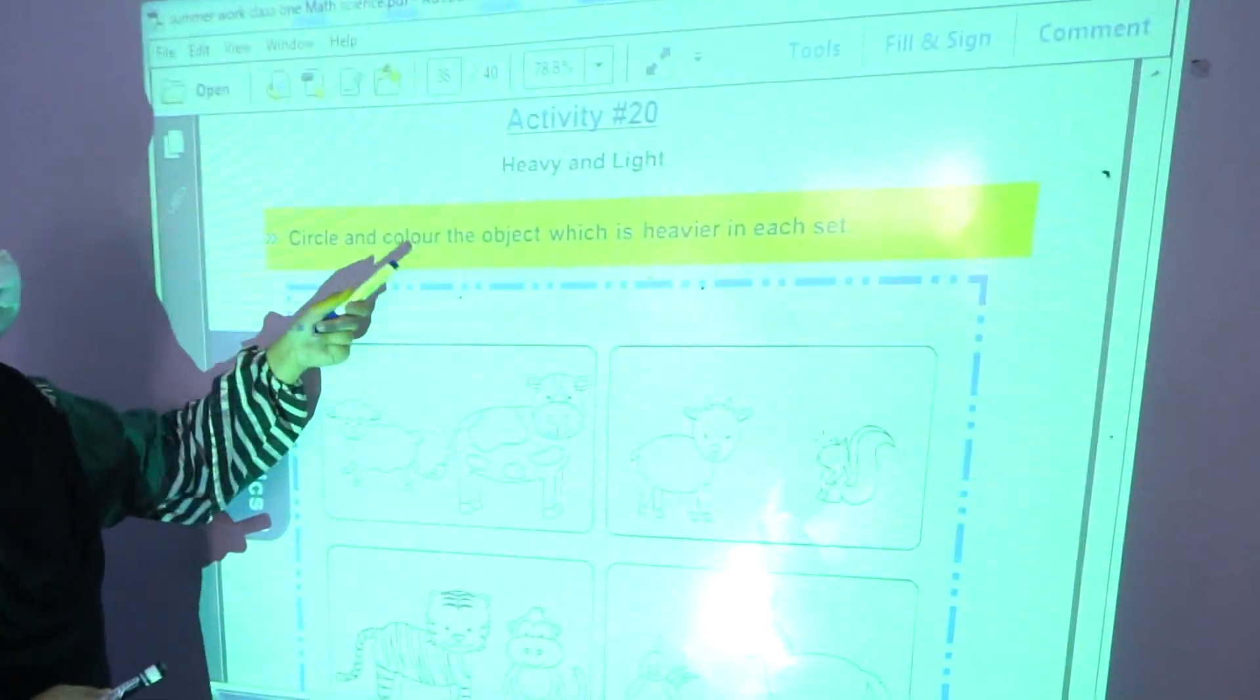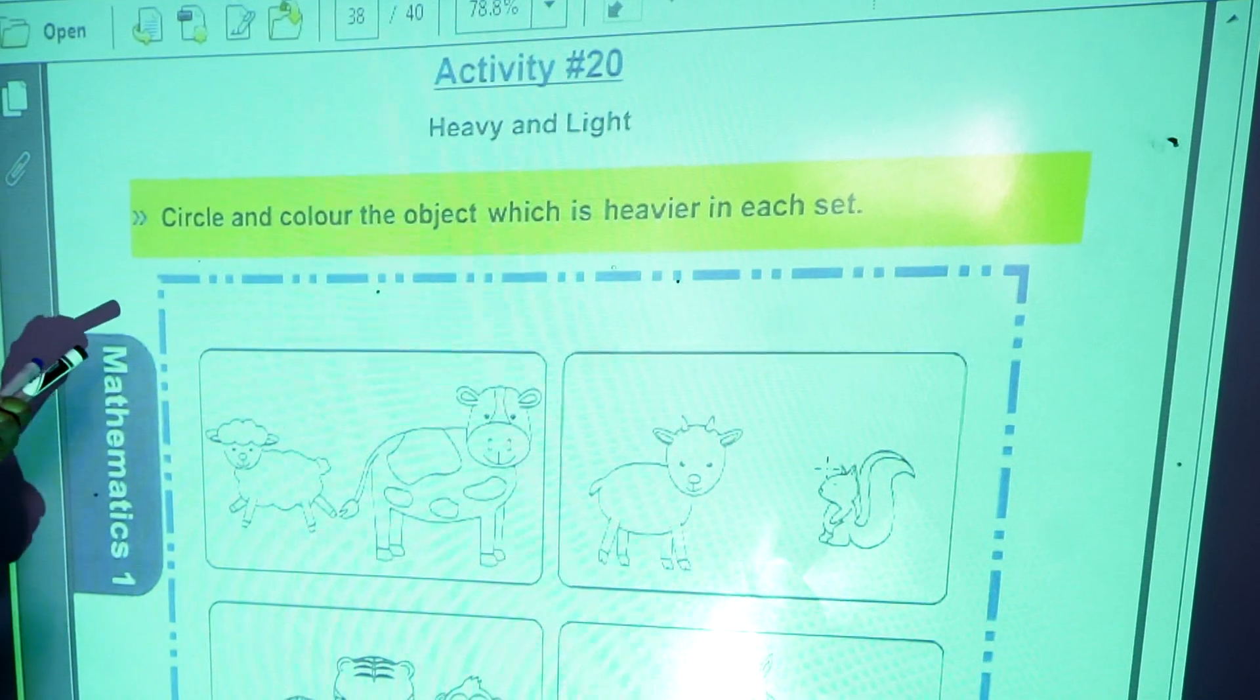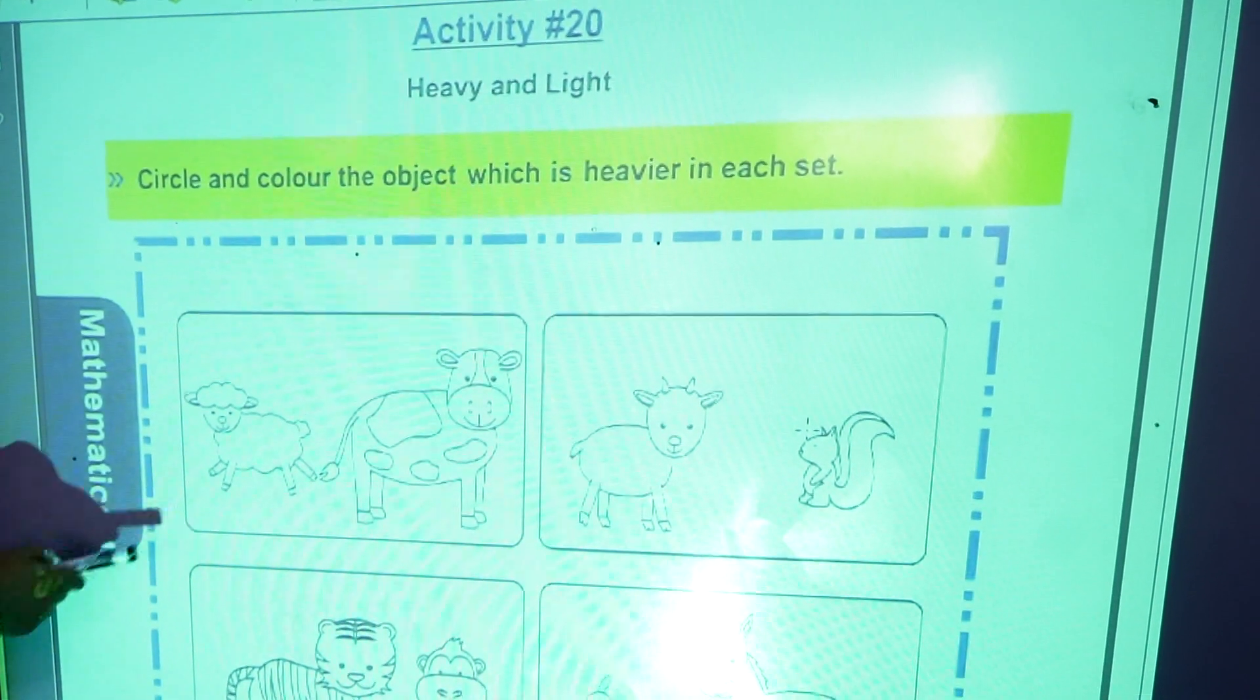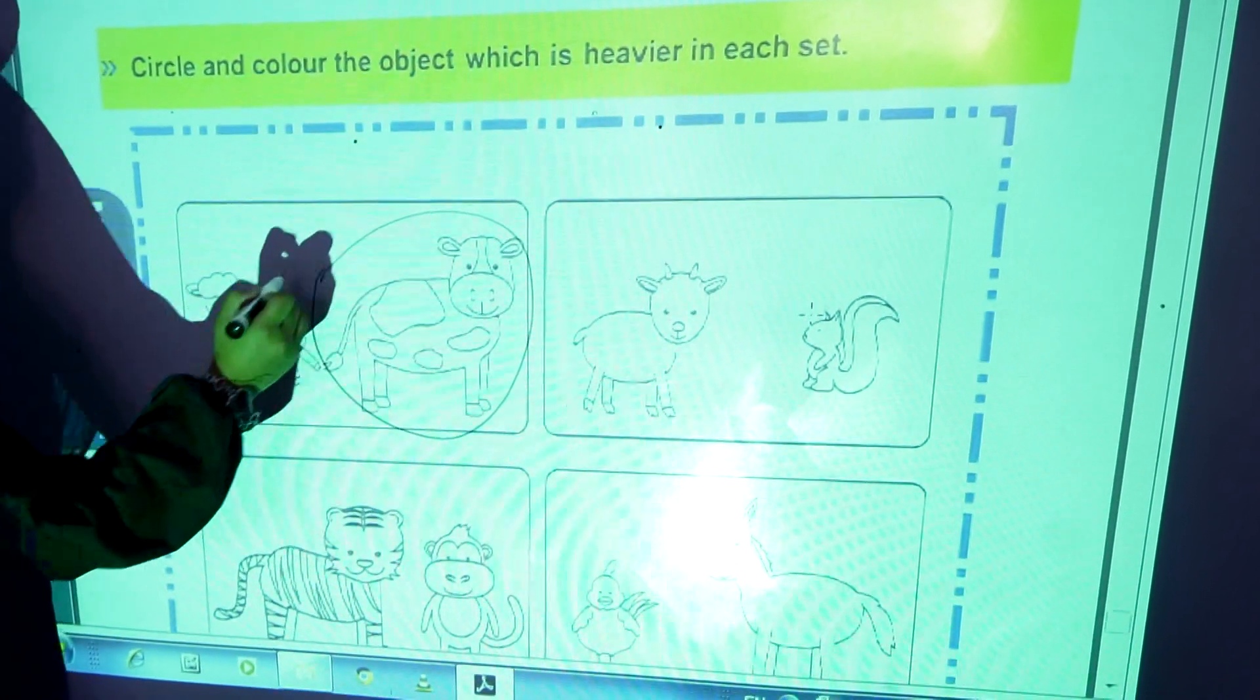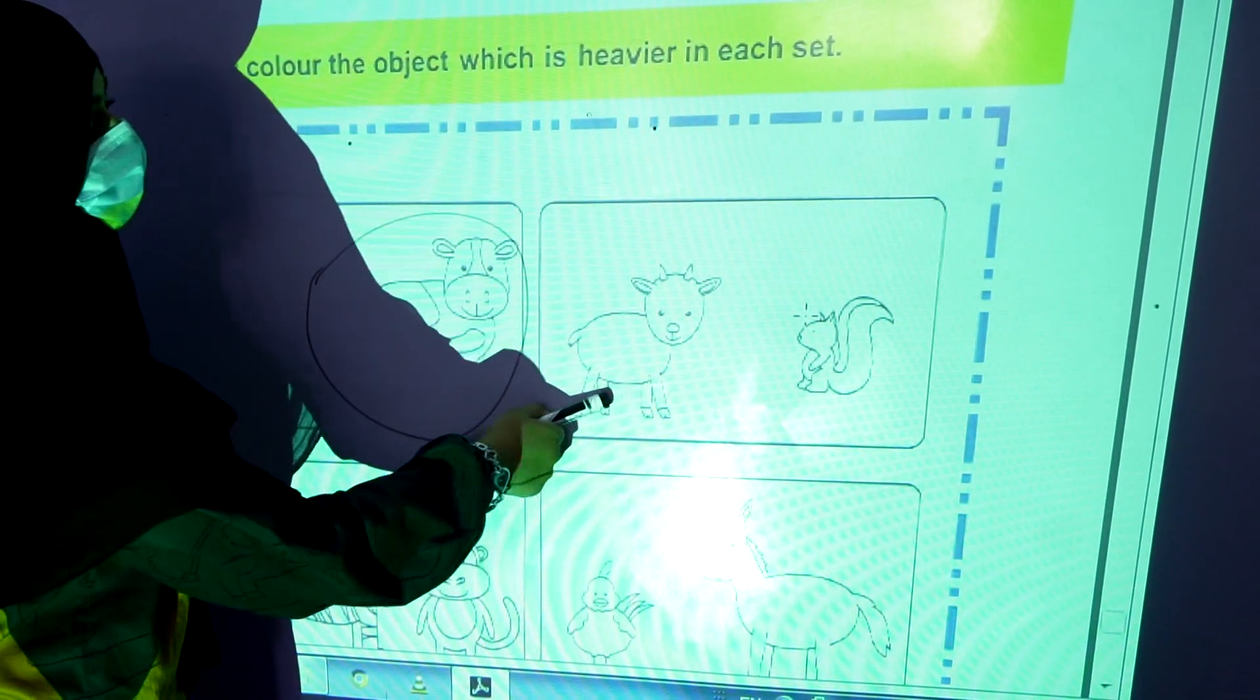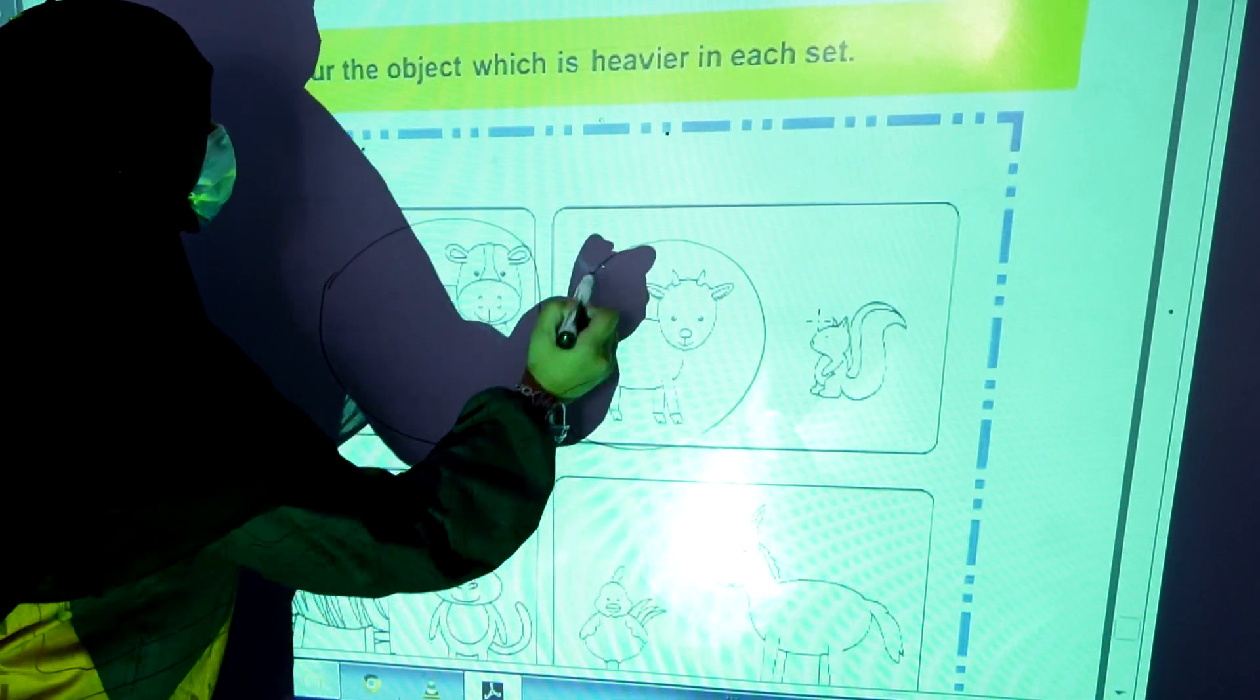Now activity number 20, heavy and light. Circle and color the object which is heavier in each set. Which one is heavier? A cow is heavier than a sheep. Goat and squirrel. Which one is heavier? A goat is heavier than a squirrel.